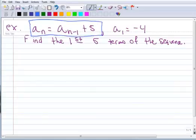So n means any position. The value of the term at any position equals a sub n minus 1, so that would be any position but the position before it. So if n was the 50th term, n minus 1 would be the 49th term, the term before it, plus 5.